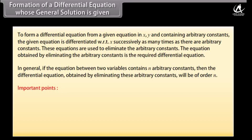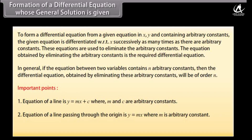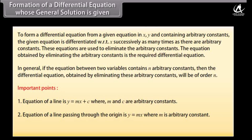Important points. The equation of a line is y = mx + c, where m and c are arbitrary constants. The equation of a line passing through the origin is y = mx, where m is an arbitrary constant. The equation of a circle with center (h, k) and radius r is (x - h)² + (y - k)² = r².